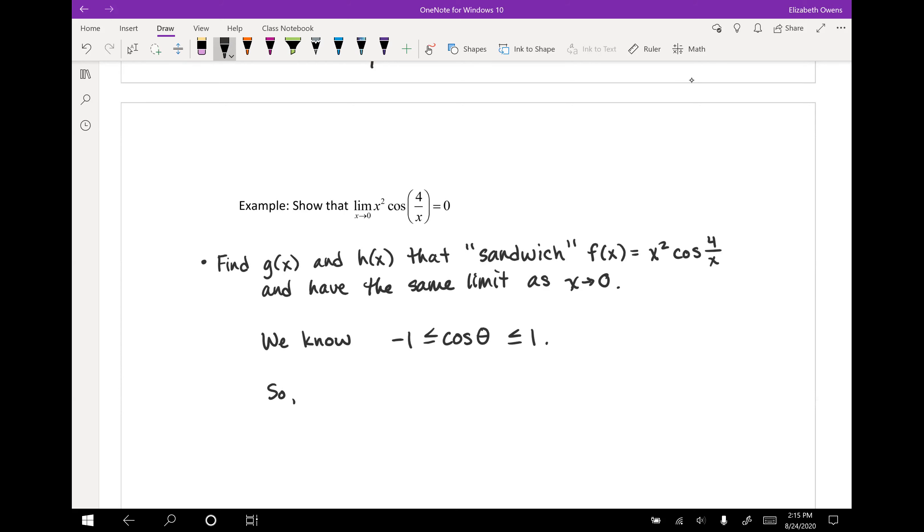For our function here, we have something that looks a little bit like that. This portion of the function, we have cosine four over x. And so four over x is going to essentially take the place of theta right here. The inequality will still hold true. So we know that negative one will be less than or equal to cosine four over x. That'll be less than or equal to one, because it's just a cosine function again.